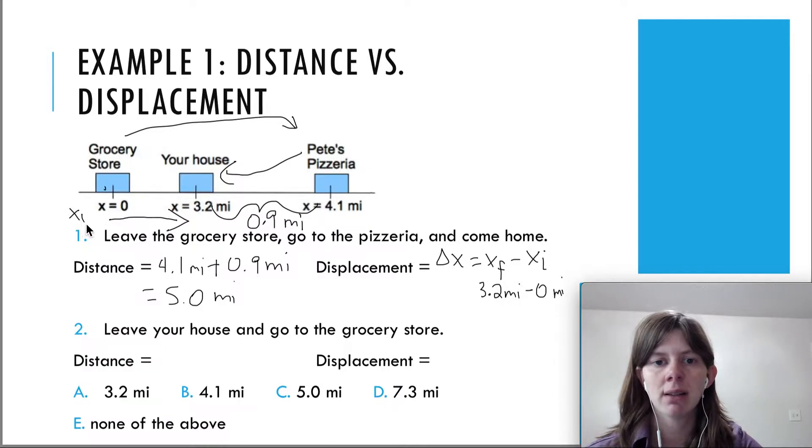This is x initial, and this is x final. And sorry, I used the xi here instead of x zero. I'm trying to use x zero to be consistent. So that means that the displacement is 3.2 miles. So that was choice A.